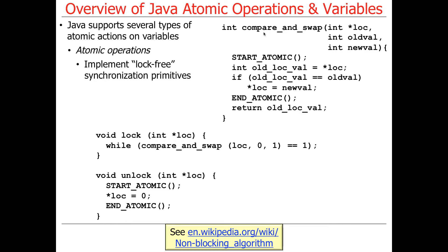What compare and swap does is it takes a memory location — like a pointer to a memory location in C — an old value, and a new value. The way compare and swap works is it runs the following code atomically. So whatever the hardware does to ensure atomicity, like disabling interrupts or whatever it does, it goes ahead and reads the value at that memory location. If the value currently at the memory location equals the old value passed in, those two things are compared.